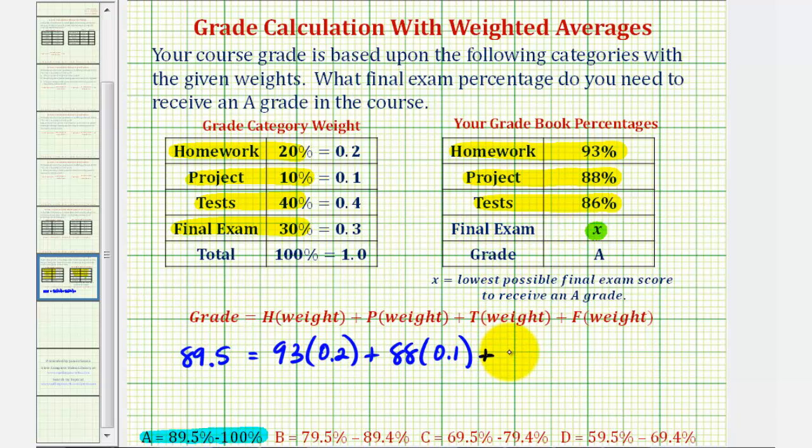Plus the test average of 86 times the weight of 40% or 0.4 as a decimal. And then finally the last grade is the final exam percentage, which we don't know. That's X times the weight of 30% or 0.3.